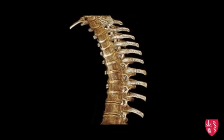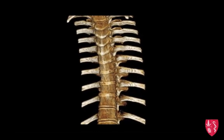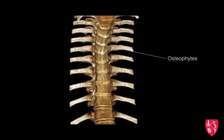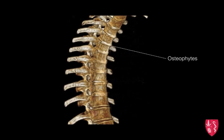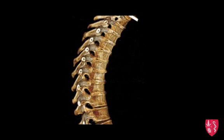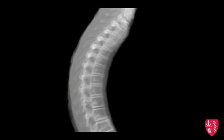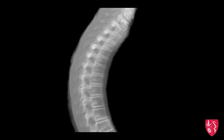Thickening of bone at the edge of a joint can create ridges of bone known as osteophytes, commonly referred to as bone spurs. Osteophytes usually limit joint movement and typically cause pain. On x-ray, there is less space between the affected bones caused by the decreased amount of cartilage, which does not show up on the x-ray.